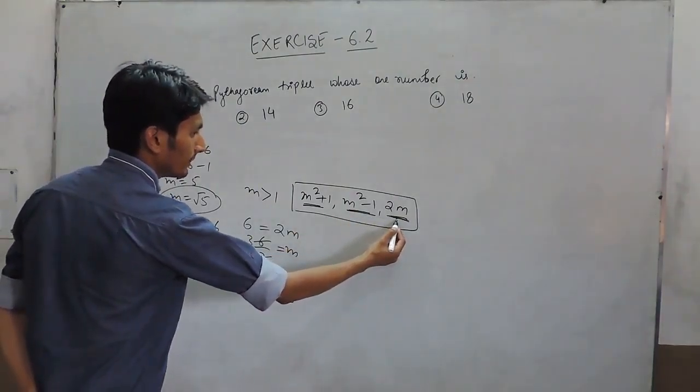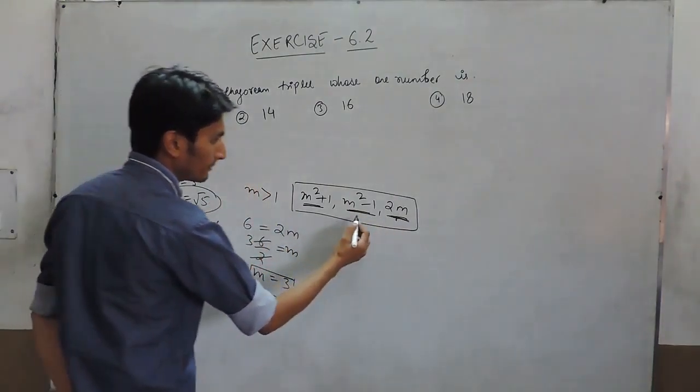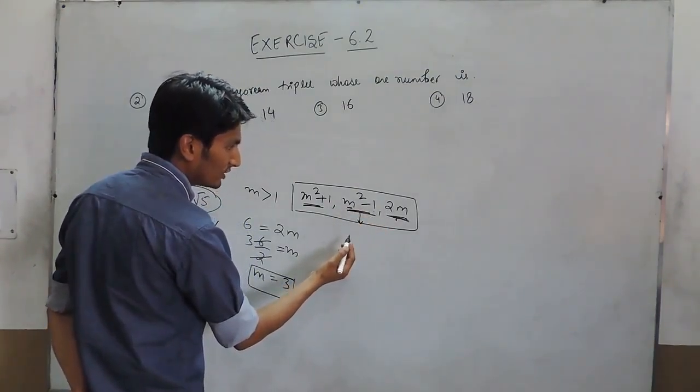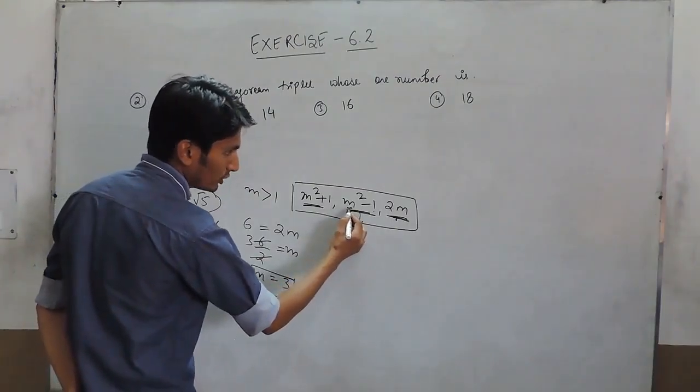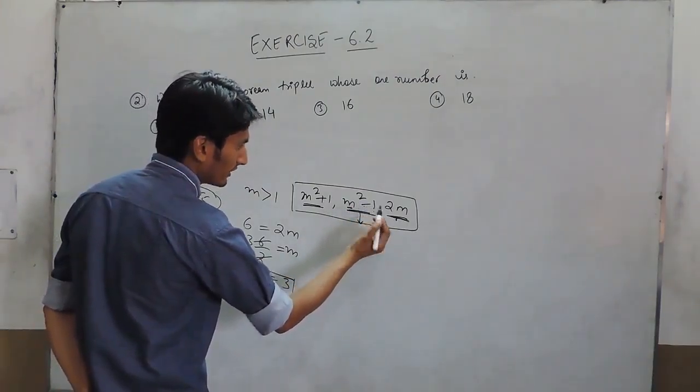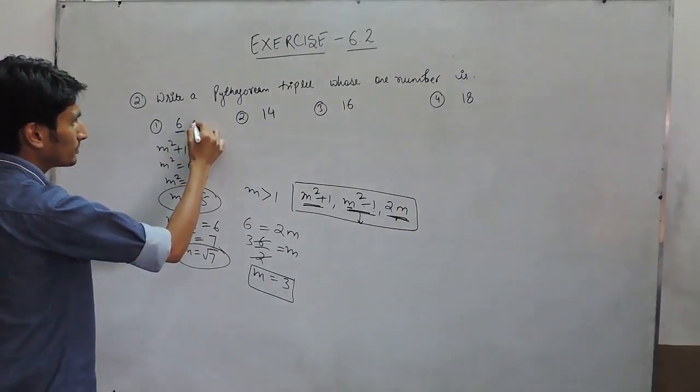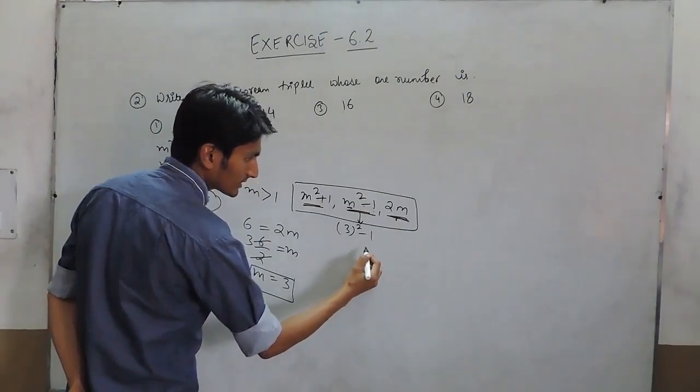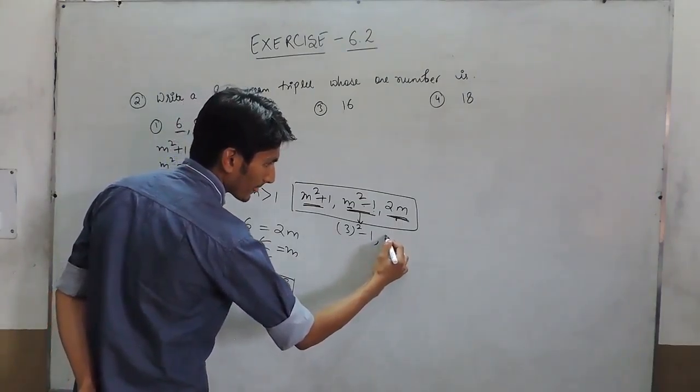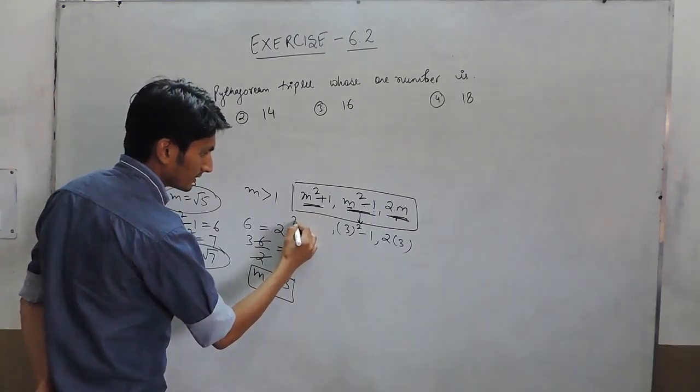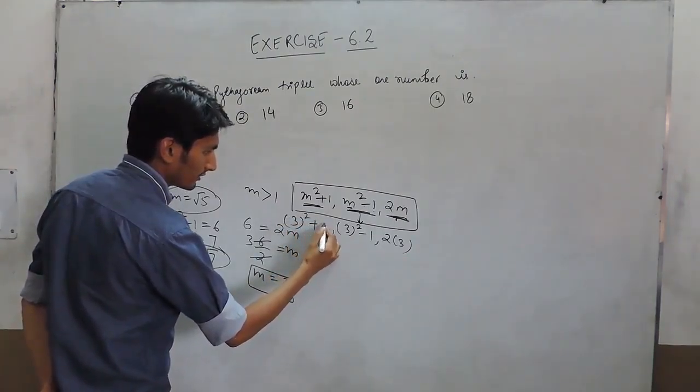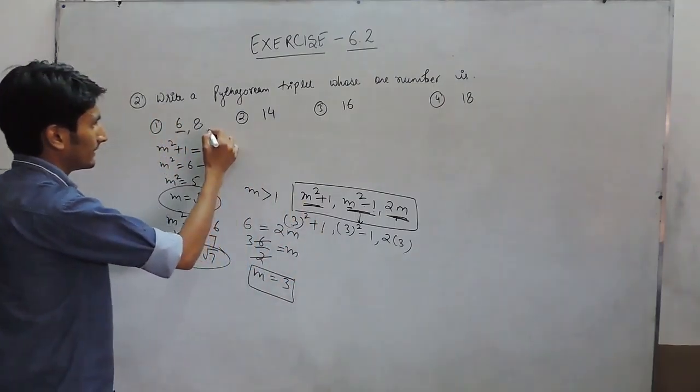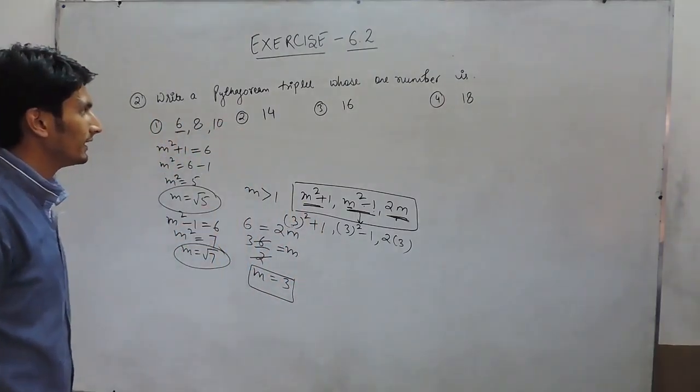If the first number is 2m, the second number must be this. The value of m is 3, so the value of this must be 3² - 1 = 8. So the other number must be 8. And the last one is 3² + 1, so this is 8 and this is 10. So the next number must be 10.